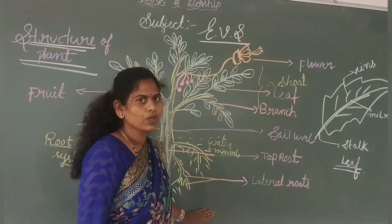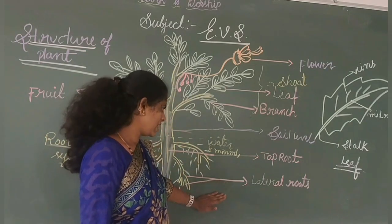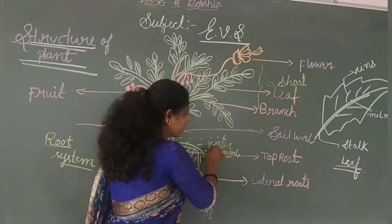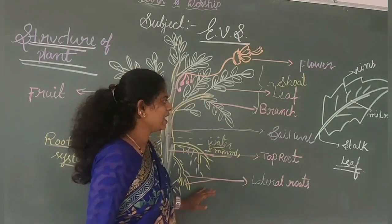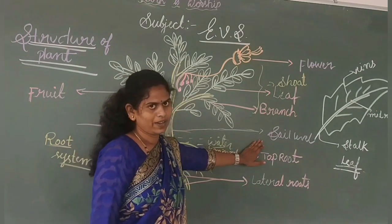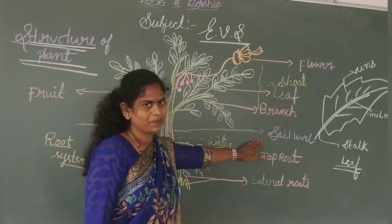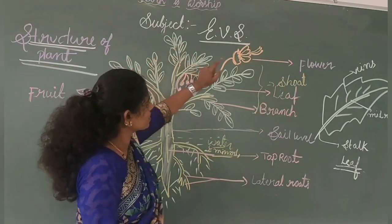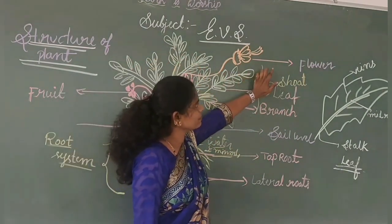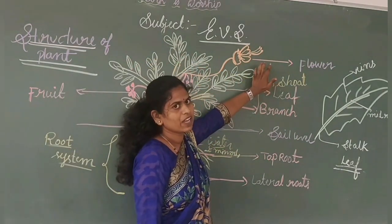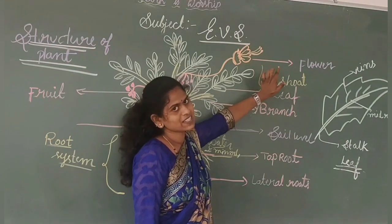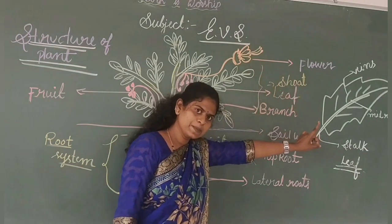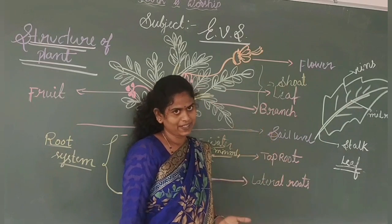What is the function of the root? Roots are always involved in the absorption of water and minerals present in the soil. What is the function of the flower? Flowers help in producing seeds, and those seeds help in producing a new plant.